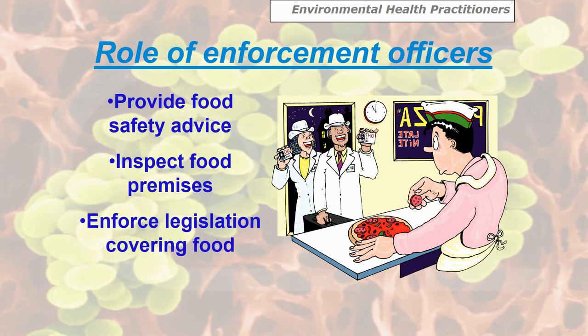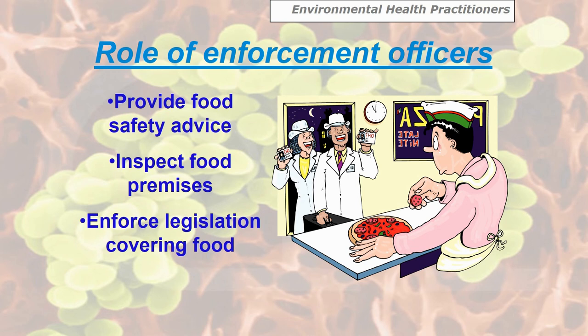Who are the 'food police'? They're called Environmental Health Practitioners — they're the enforcement officers employed by the local council. If you've got a problem with food poisoning as a victim, you contact the local council and ask to be put through to Environmental Health. They're sometimes seen on identity cards as EHO — Environmental Health Officer — but these days they tend to be called Environmental Health Practitioners.